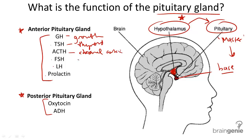Follicle stimulating hormone causes ova to mature in females, and in males will stimulate the testes to make sperm. Luteinizing hormone stimulates the ovaries to produce a corpus luteum, which you may learn about when studying the female reproductive system. And in the male, luteinizing hormone stimulates the testes to make testosterone.